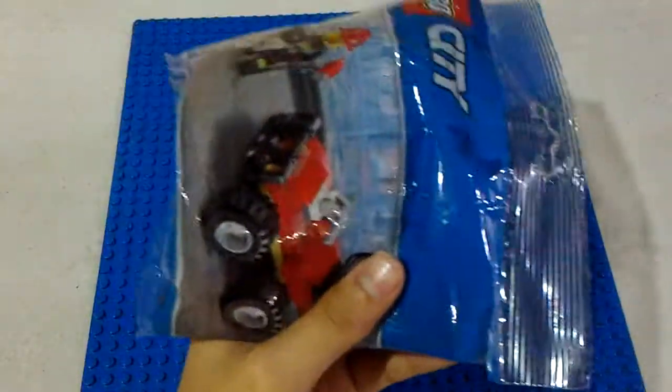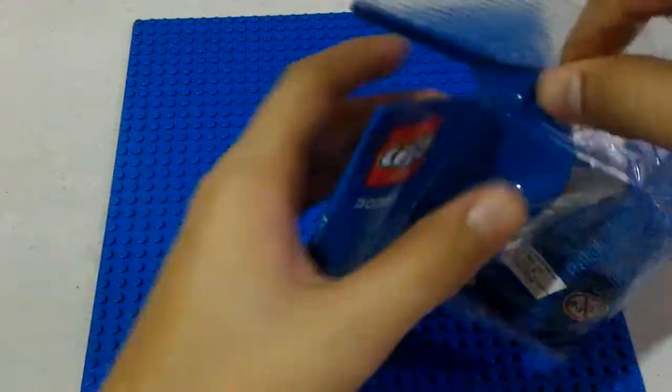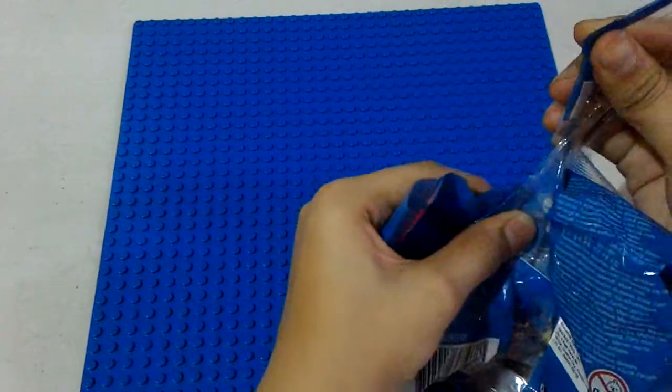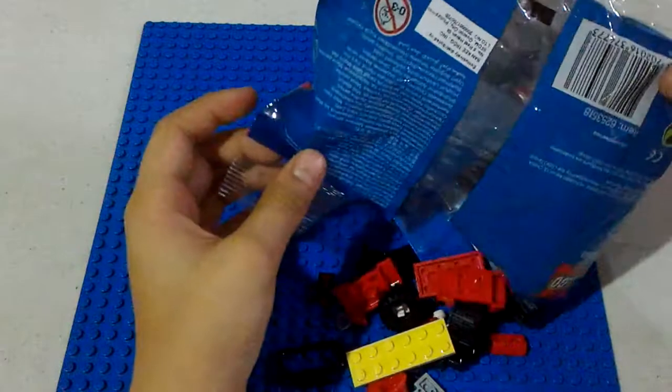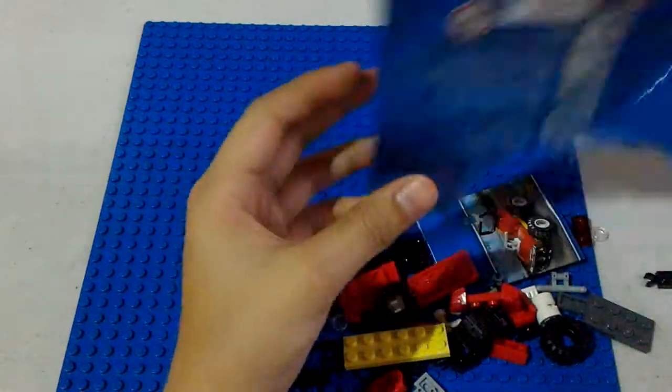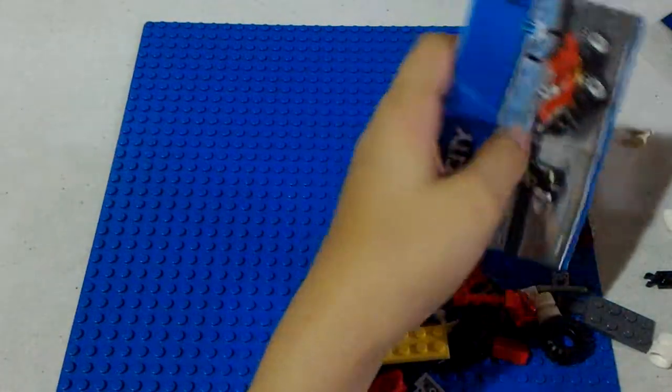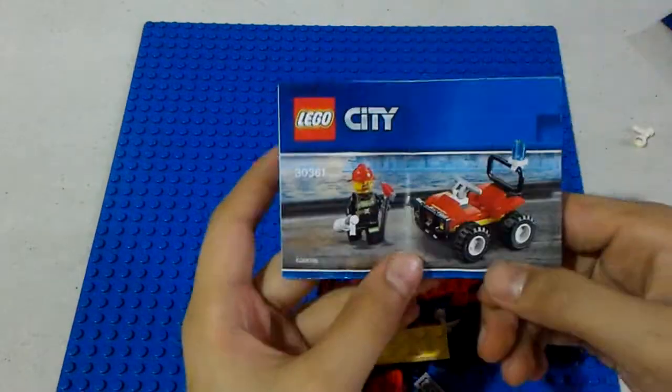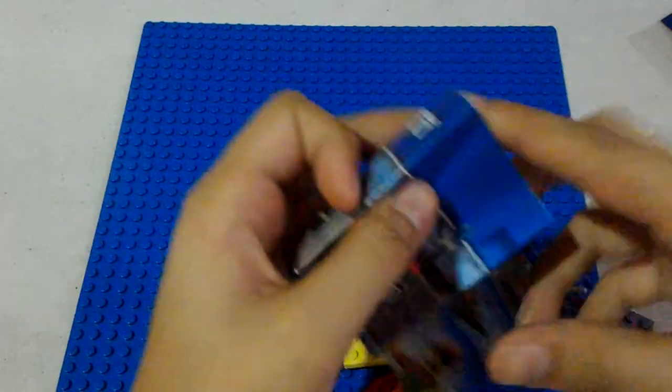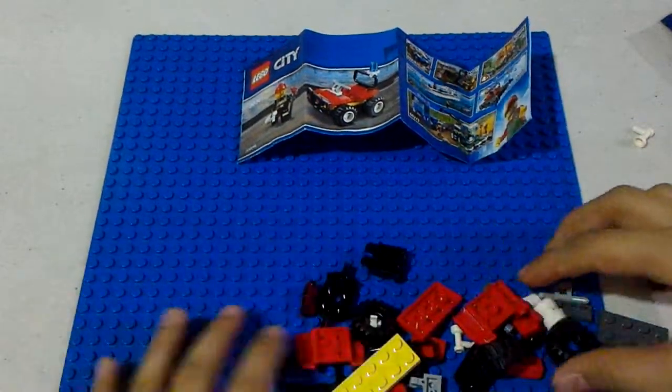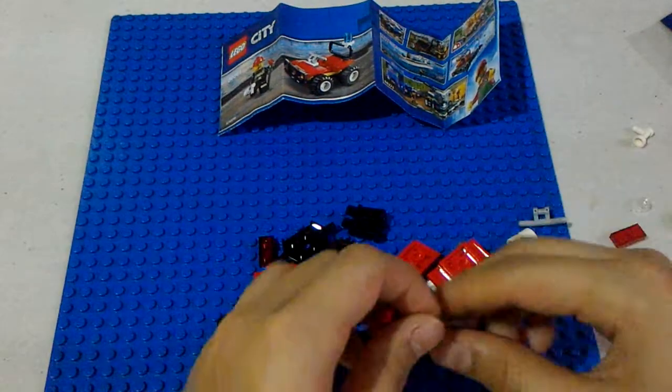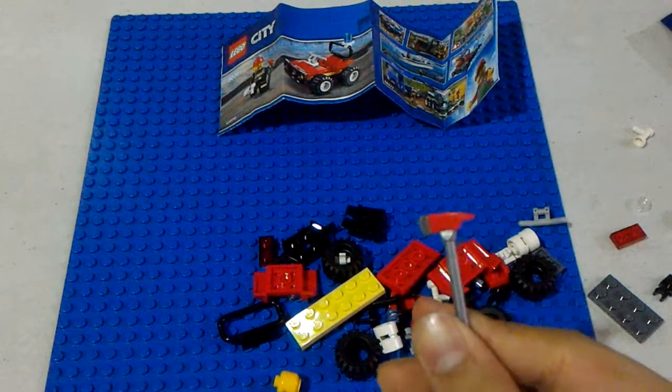So as you can see in here there are around 50 to 60 pieces and this is the instructions and these are the parts and this is the axe here.